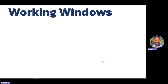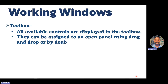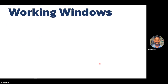The next working window is the Toolbox, which is very important. All available controls are displayed in the toolbox - LEDs, sliders, radio buttons, switches, and more. They can be assigned to an open panel using drag and drop, by double-clicking, or by left-clicking the required control. You can see the analog gauge, button, and CAPL output view - this is how the toolbox looks, and I will cover it in more detail in the next couple of minutes.